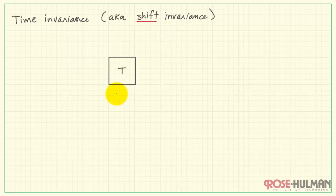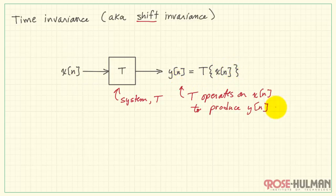Let's begin by considering a system T. The system has an input X that produces an output Y, and the output is formed by the system T operating on the input X. That's what the notation means here. T operates on X to produce the output Y.